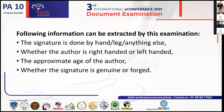The following information can be extracted by the examination: whether the signature is done by hand, leg, or anything else — for example, specially-abled people can write with a leg, or a person can sign by holding a pen in their mouth. Additionally, whether the author is right-handed or left-handed, the approximate age of the author, whether the signature is genuine or forged, and the sex of the person — as studies show that the angle measured from the line of writing to the centers of curvature is smaller in females compared to males.